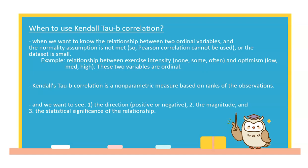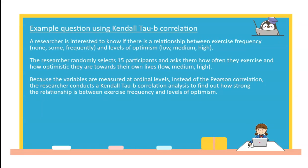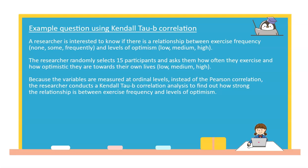Let's look at an example research question in which we can use Kendall Tau-B correlation to understand the relationship between two ordinal variables. A researcher is interested to know if there's a relationship between exercise frequency and levels of optimism. The researcher randomly selects 15 participants and asks them how often they exercise and how optimistic they are towards their lives.